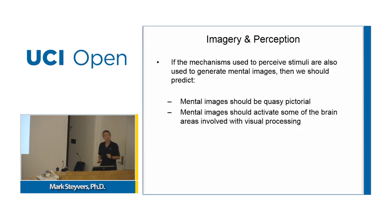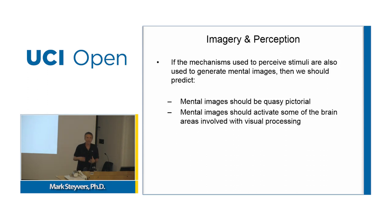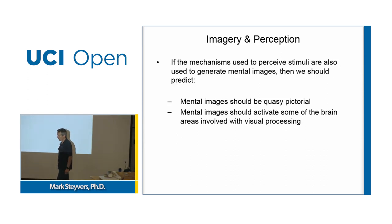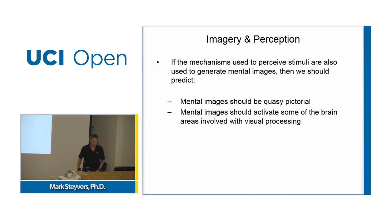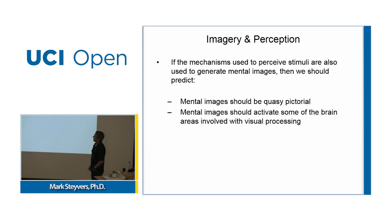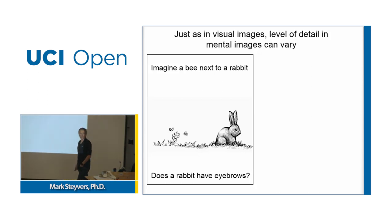If imagery and perception share resources, then mental images should be quasi-pictorial, with analog representations, and we should see evidence of that. Brain imaging studies can show what areas are active when people are seeing something versus imagining something, and we should see overlap in activation. You can also get evidence from very clever behavioral experiments — there's a lot of power in simple experiments that just measure how quickly people respond to a question.